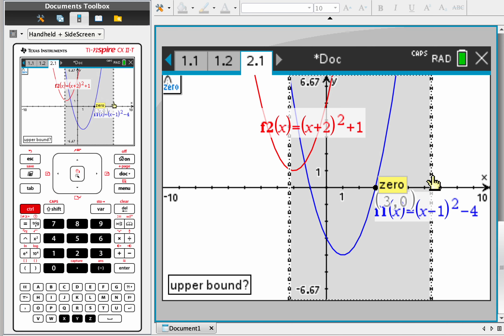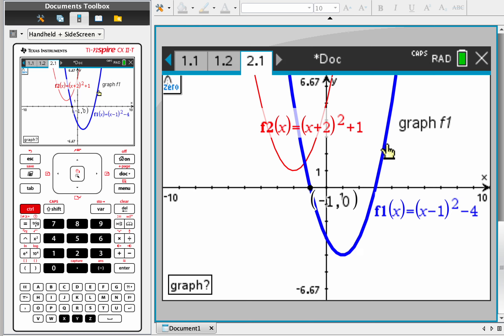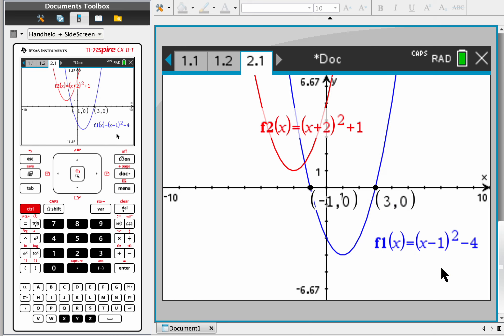And you can't, unfortunately, do two at the same time. So you have to do one, and then you have to do it again. Again, analyze graph, zero, and there's the other one. You can move that out of the way.